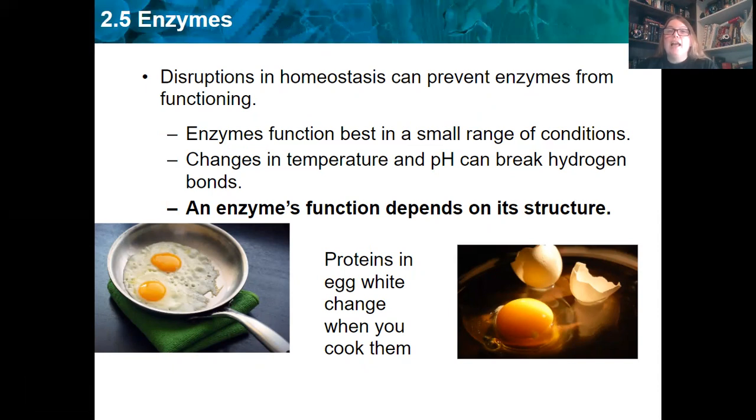Remember, protein folding happens because of hydrogen bonding. So if I cook it, like when you cook an egg, you are disrupting the hydrogen bondings and changing the shape of the protein, and thus you are changing the shape of the enzyme and changing what it does. So proteins in egg whites change when you cook them. So that's what we're seeing right here. A raw egg on the right, it's kind of clear and liquidy, but when I fry it in a skillet, those proteins get changed, and they coagulate, and they make cooked egg. So this is what happens to an enzyme. Same thing. The heat's applied, and it changes what it does.